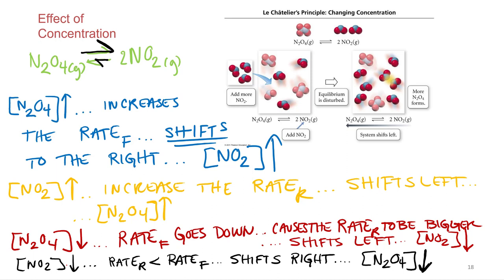Here's a cartoon drawing to back that up. In the second scenario, we added NO2. The equilibrium shifts to the left to make more N2O4, basically using up the NO2 that was added to minimize the disturbance. It's always nice to have cartoon drawings back you up.